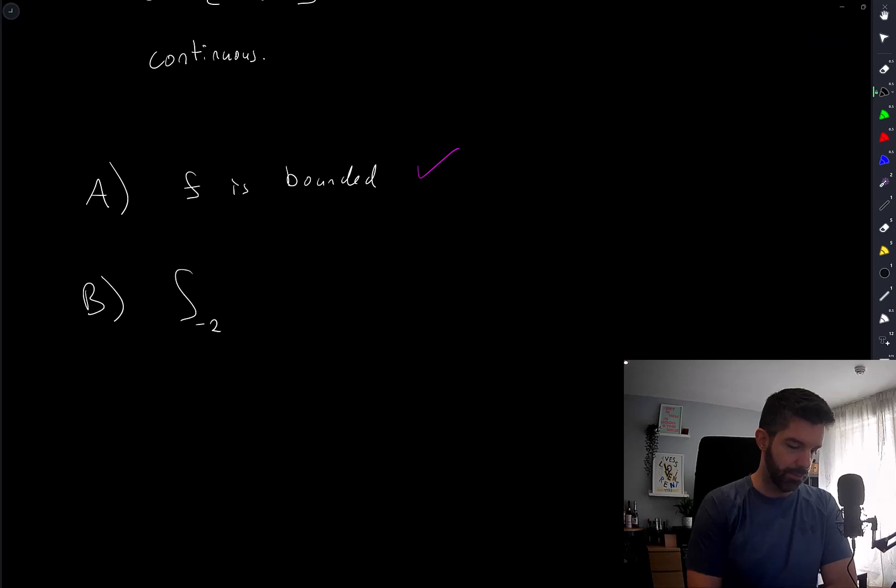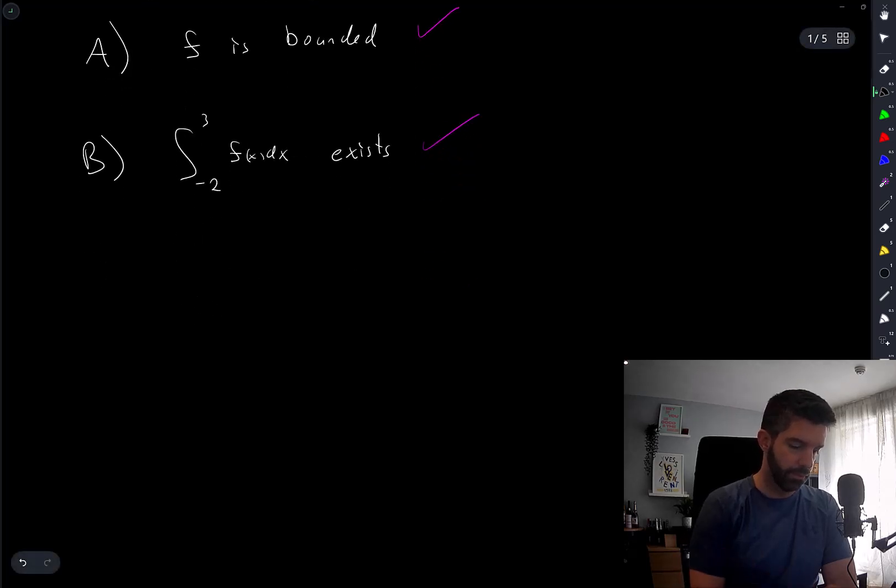The integral from negative 2 to 3 of f of x dx exists. Well, they wrote as f of t dt, that's fine. This is also true. Continuous functions can be integrated.